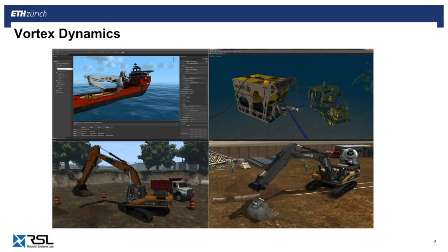Vortex Dynamics has the advantage that it can simulate entire ships — simulating waves on the ocean and their influence on the motion of the ship. You can also simulate underwater vehicles, including with cables attached. So if a vehicle needs to drag an undersea cable, you can simulate that with Vortex. But most importantly for us, it has a simulation also for soil, which you can see here — an excavator digging with a hole and some soil in the shovel.